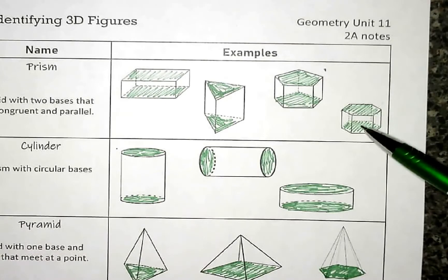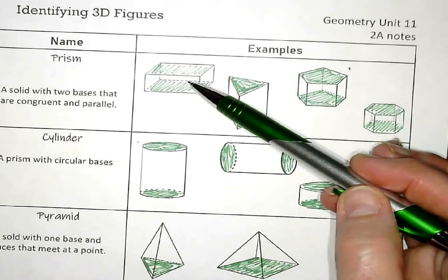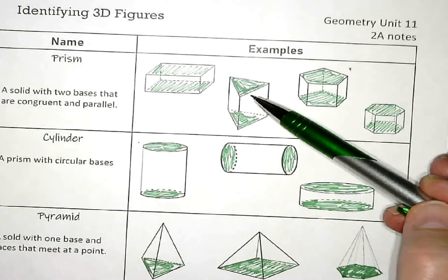And this would be a hexagonal prism because the bases are hexagons. Our work is mainly going to deal with a rectangular prism and triangular prism.